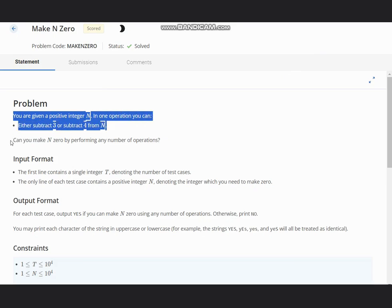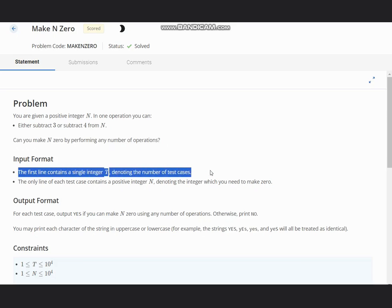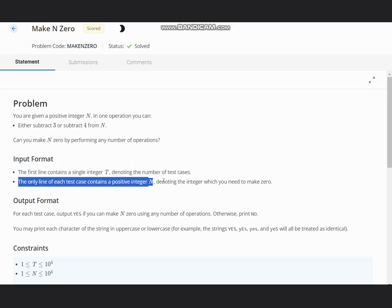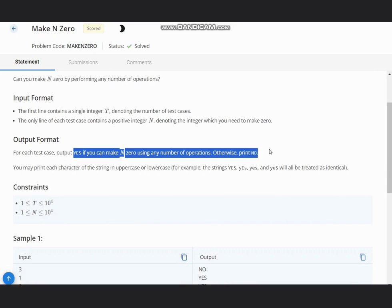Can you make N zero by performing any number of operations? The first line contains T, the number of test cases. Second line contains N, denoting the integer which you need to make zero. Output is YES or NO - YES if you can make N zero using any number of operations, otherwise NO.